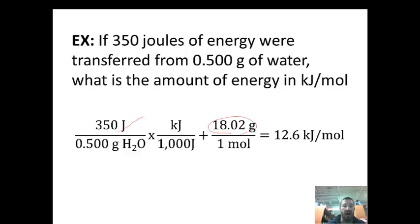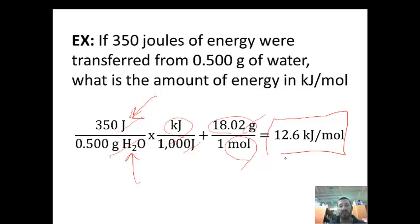And now we see that joules have cancelled, grams have cancelled, and now we have the top final two units, which is kilojoules per mole. And now we've done really a two-step factor label, but we've changed not only what's in our numerator, which is joules, but we've also changed what's in our denominator, which is grams. And it gives us a final answer of 12.6 kilojoules per mole.